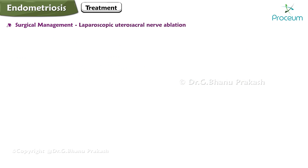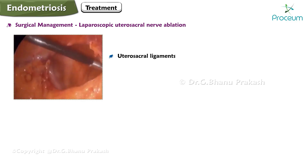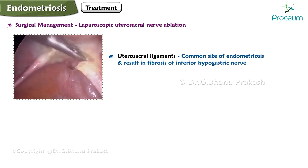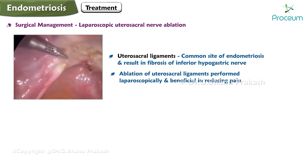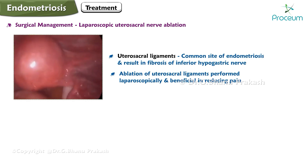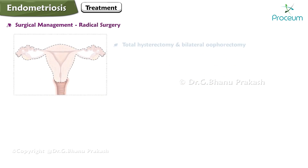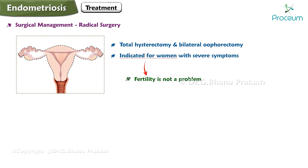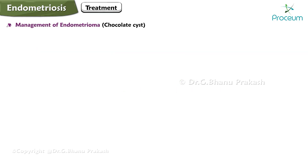Endometriotic deposits can be destroyed by electrocautery or laser, with the aim of excising all visible lesions and lysing all adhesions to restore normal anatomy. Laparoscopic uterosacral nerve ablation can be performed as the uterosacral ligaments are a common site of endometriosis and can cause fibrosis of the inferior hypogastric nerve. Radical surgery — total hysterectomy and bilateral oophorectomy — is indicated for women with severe symptoms when fertility is not a concern and other treatments have failed.